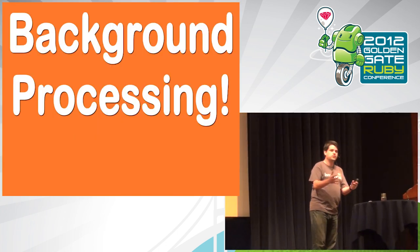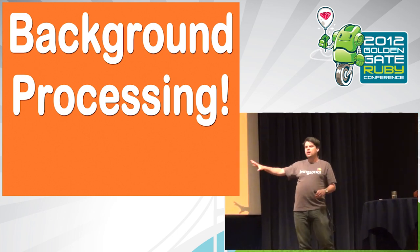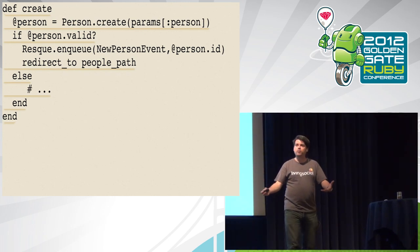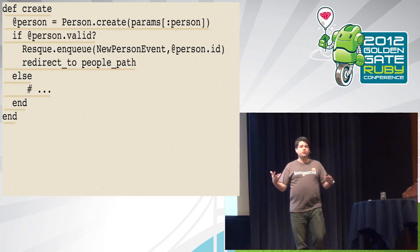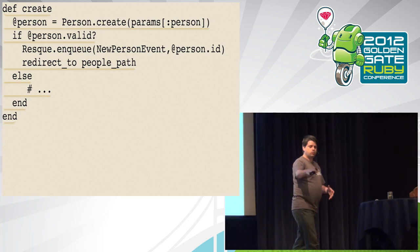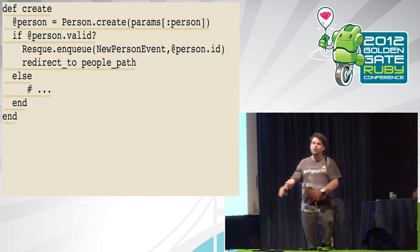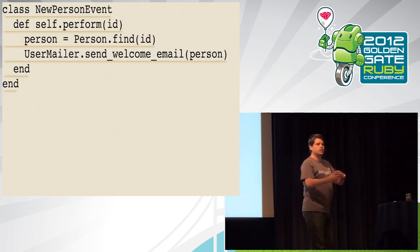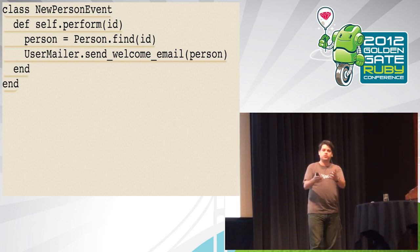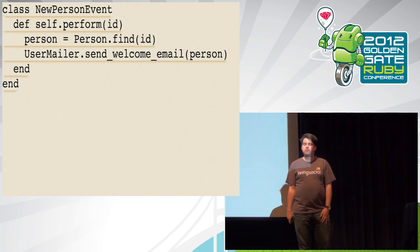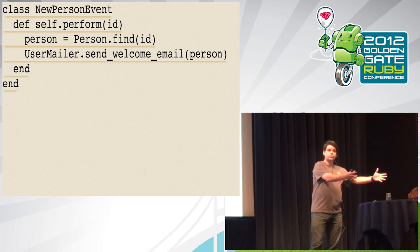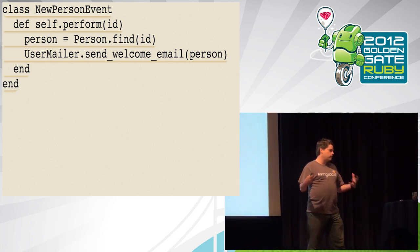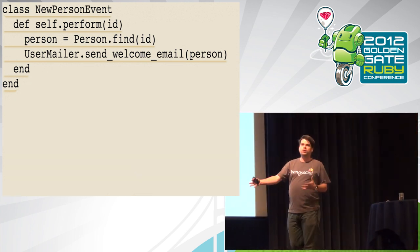So we use background processing. We take the stuff that doesn't need to happen in sync with the user — namely sending the email — and put it in an offline task. We've decided to use Resque. Resque creates a job serviced by the NewPersonEvent class, given the person's ID when it runs. This jams that into JSON and shoves it into Redis, a super fast key-value store. So this call is going to be way faster than the mailer call. On the other end, another process runs to process everything put into Redis. Resque finds the class, calls perform, finds the person in the database, and sends the email. Now we can allocate resources to maximize user experience and manage background processes separately, even on a different machine. We've got configurability, flexibility, and ability to scale.